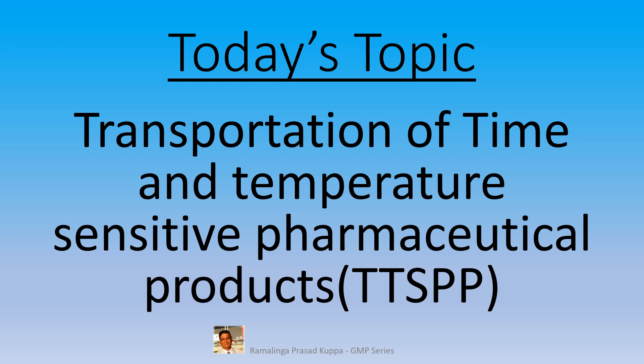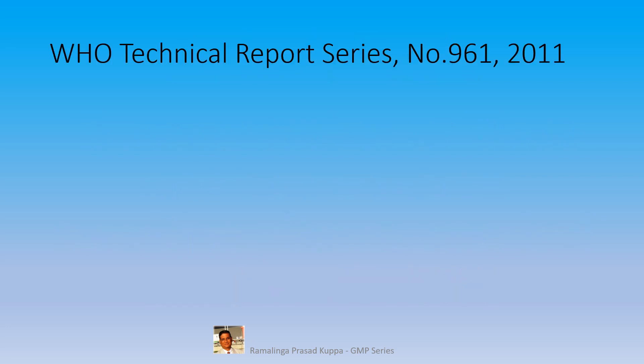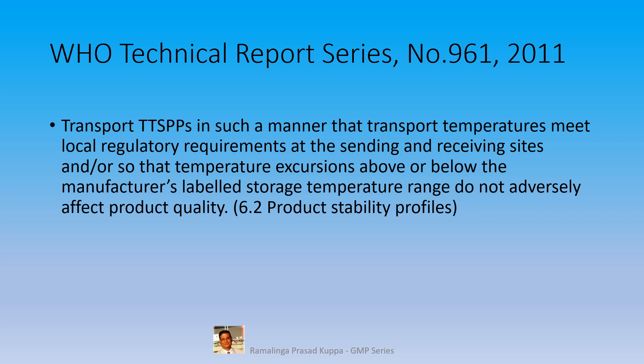In this video, we will restrict the discussion to transportation only. Other requirements will be discussed later at another opportunity. Let us see the WHO Technical Report Series number 961 dated 2011 prescription: transport TTSPPs in such a manner that transport temperatures meet local regulatory requirements at the sending and receiving units, so that temperature excursions above or below the manufacturer's labelled storage temperature range do not adversely affect product quality. This is the prescription under section 6.2 of the product stability profile. To ensure that product stability is maintained, it is necessary to have such controls.